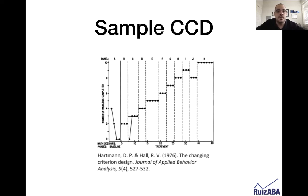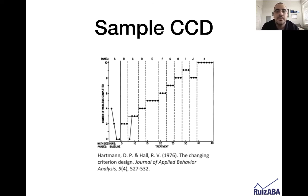When the criterion was set to two correct and they achieved it three days in a row, they moved the criterion up to three. In panel C, the first day they got zero corrects, then they got three corrects in a row, and then they moved up to four, then five. They also lengthened the amount of time the person had to get five correct. Then they dropped back down to three, then up to six, seven in panel G for three correct, eight in panel H for three correct — eight correct three times in a row — then up to nine, and then back to eight.